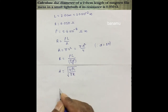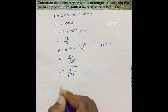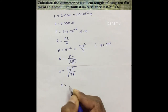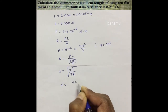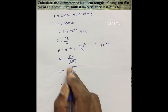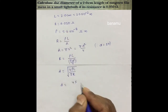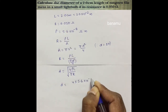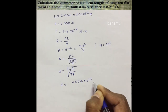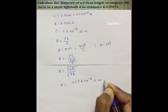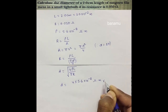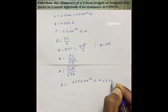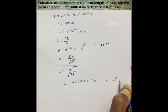Substituting the values: the diameter of the tungsten filament D is equal to the square root of 4 times 5.6 into 10 to the power of minus 8 ohm meter, with the given length and resistance values substituted into the formula.